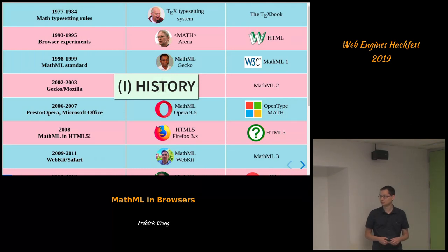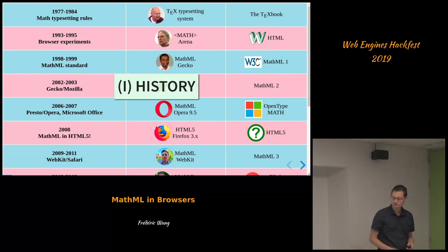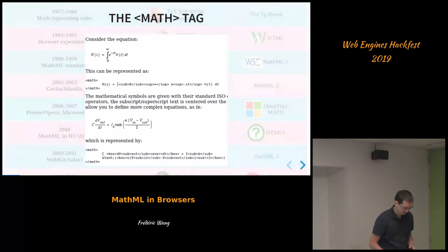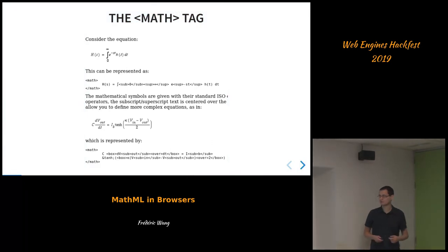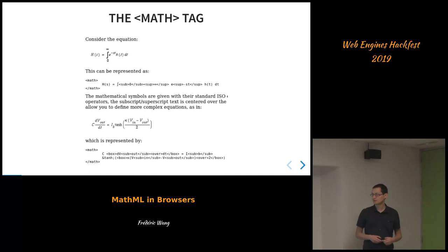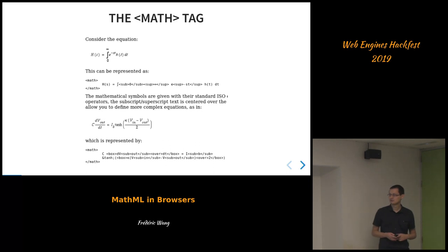I'm going to give a very quick history of MathML, focusing on the most important details — key milestones for implementing MathML in browsers. In the early version of HTML, there was already a proposal for a math tag in the early 90s, but it was abandoned and a separate specification was created: the MathML specification, released in 1998.